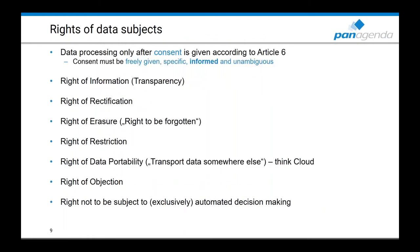As of when GDPR becomes effective, all EU citizens have the following rights. First, they have the right that their data is processed only after they have given consent — and that consent has to be freely given, specific, informed, and unambiguous. That means you can no longer have a registration form for a newsletter with an opt-in already checked. It has to be explicitly given by that person.